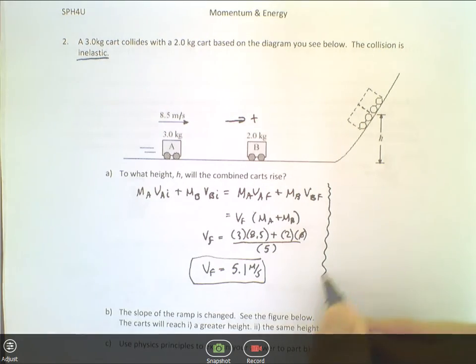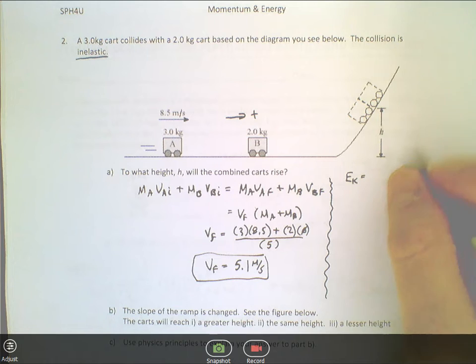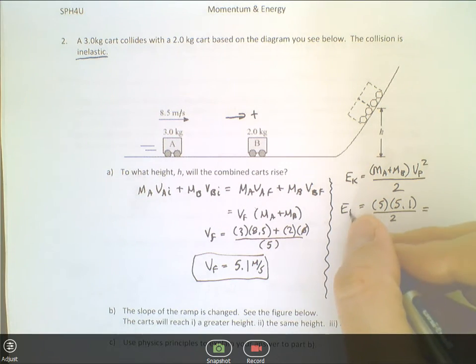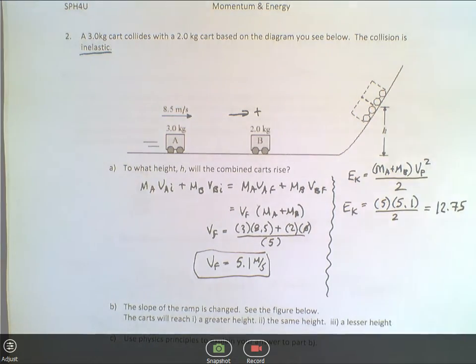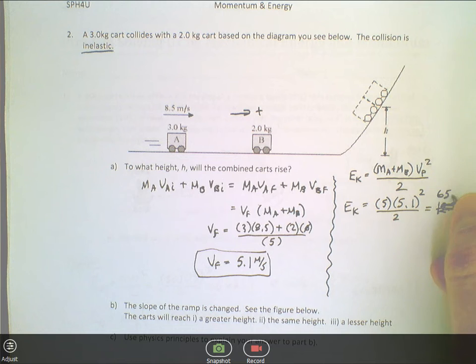At that point, what kind of energy did they have? Well, since they're at the bottom of the hill, all of the energy was kinetic. So that's MA plus MB, because they're combined together, times the speed they were traveling at, all over 2. They had a final speed of 5.1 over 2, and this will tell us how many joules of energy the carts had at that point. 5.1 squared times 5 divided by 2 is 65.025 joules. So that's how much kinetic energy it had at that point.